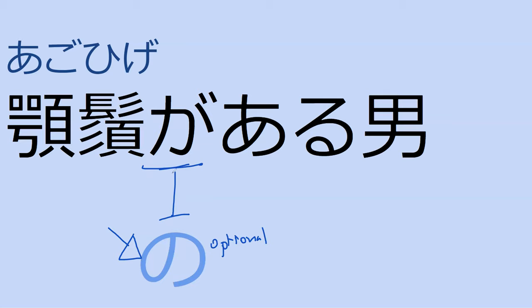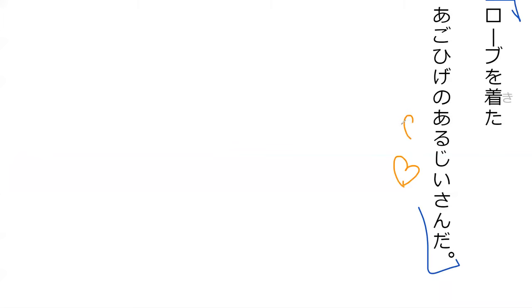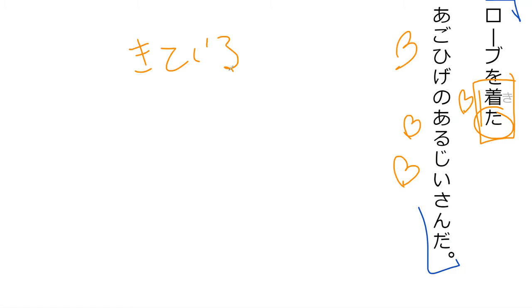Our next word is じいさん — something you've probably seen or heard a lot in anime. Do you happen to know what this means? A generic old person. Yes, a generic old person. Perfect. Now you get to go read our phrase from the book. The old man with the beard put on his robe — past tense. So it just means he's wearing a robe.